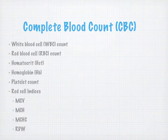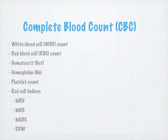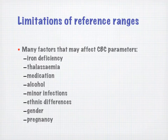The complete blood count includes a white blood cell count, a red blood cell count, hematocrit, hemoglobin, platelets, and then our red blood cell indices: the MCV, the MCH, the MCHC, and the RDW.